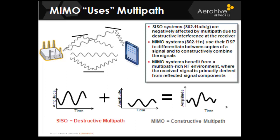Single input, single output radios would deal with multipath by using antenna diversity to mitigate it. However, both antennas were never used simultaneously. With MIMO, there are multiple radio chains — a combination of radio and antenna — and those radio-antenna pairs can be used at the same time to create upfade rather than downfade as a result of multipath. A MIMO radio is capable of transmitting up to four unique data streams within multiple RF signals, each capable of sending up to 72.2 megabits of raw data.